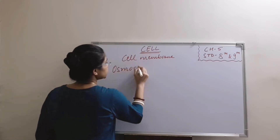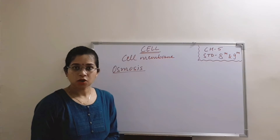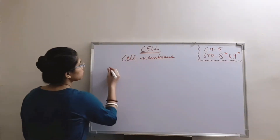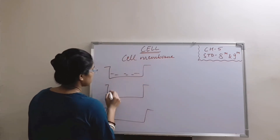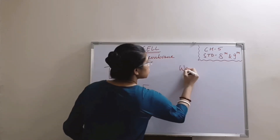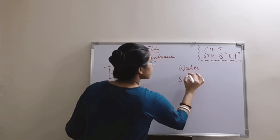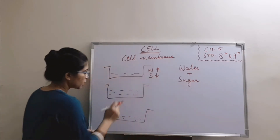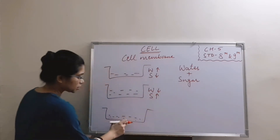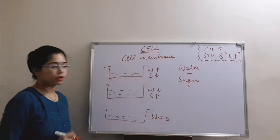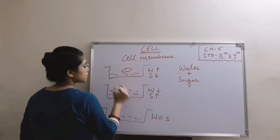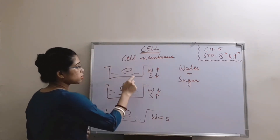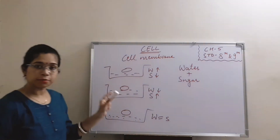Osmosis is the process in which the particles of water move from a region of high concentration to low concentration. We will see what happens if a plant cell or an animal cell is kept in a solution. We will take three types of solutions made using water and sugar — we can also add salt instead of sugar. In the first solution, the concentration of water is high and sugar concentration is low. In the second, water is less and sugar is more. In the last one, water and sugar concentration are kept equal. If we keep a cell in the first solution, there will be transfer of water particles from the solution into the cell, because the concentration of water particles is more in the solution compared to inside the cell.